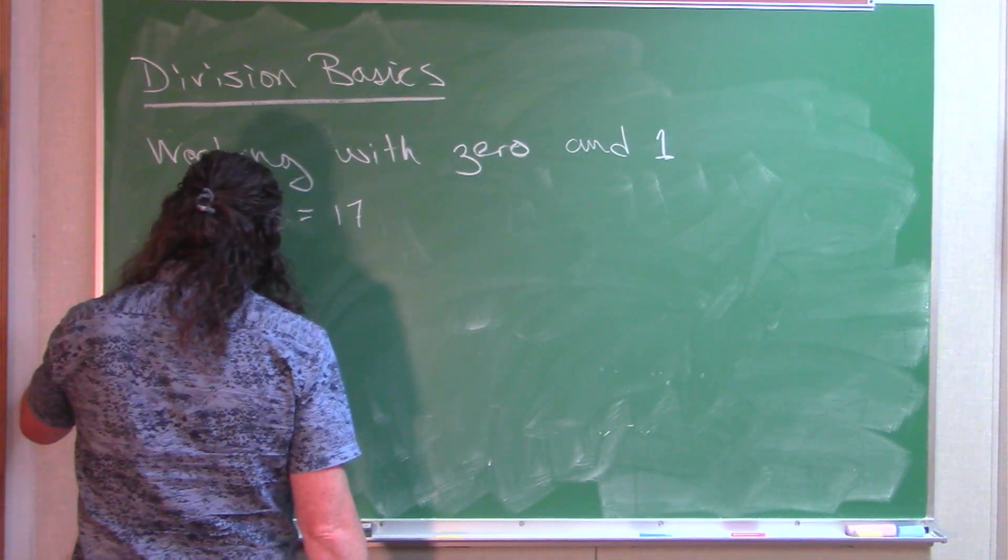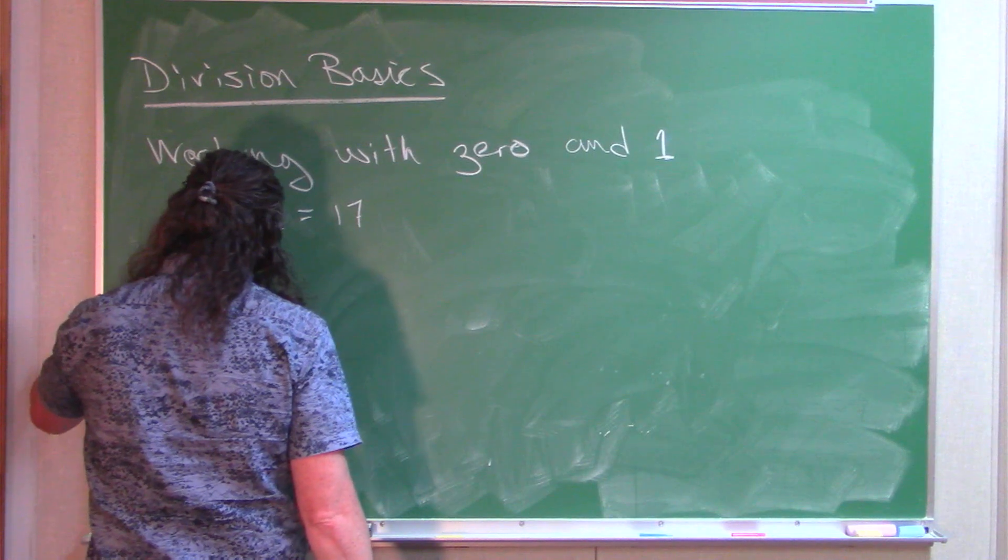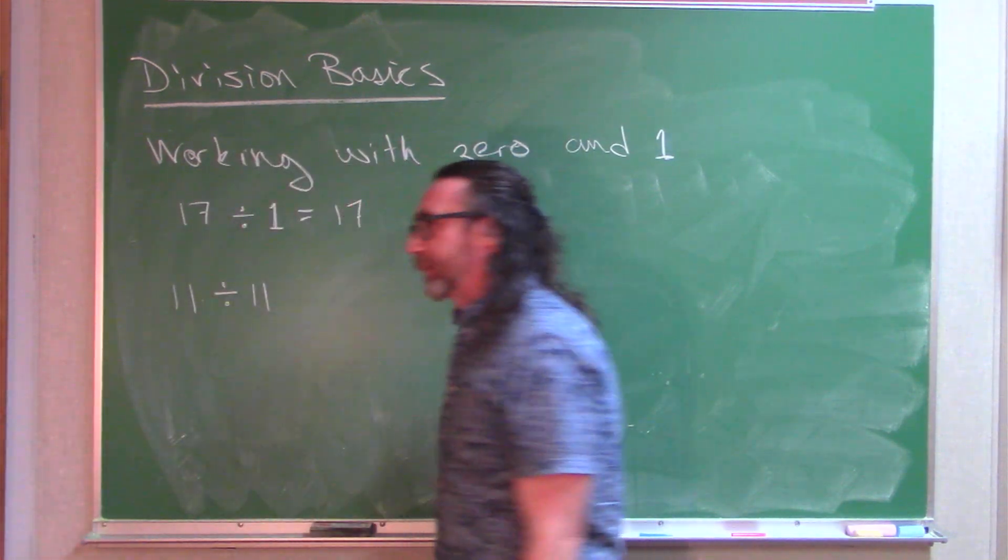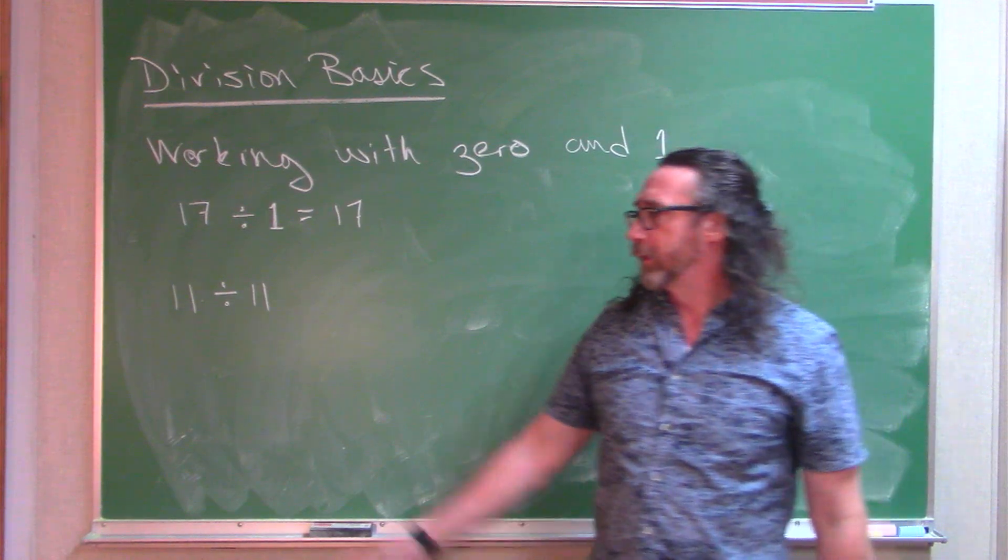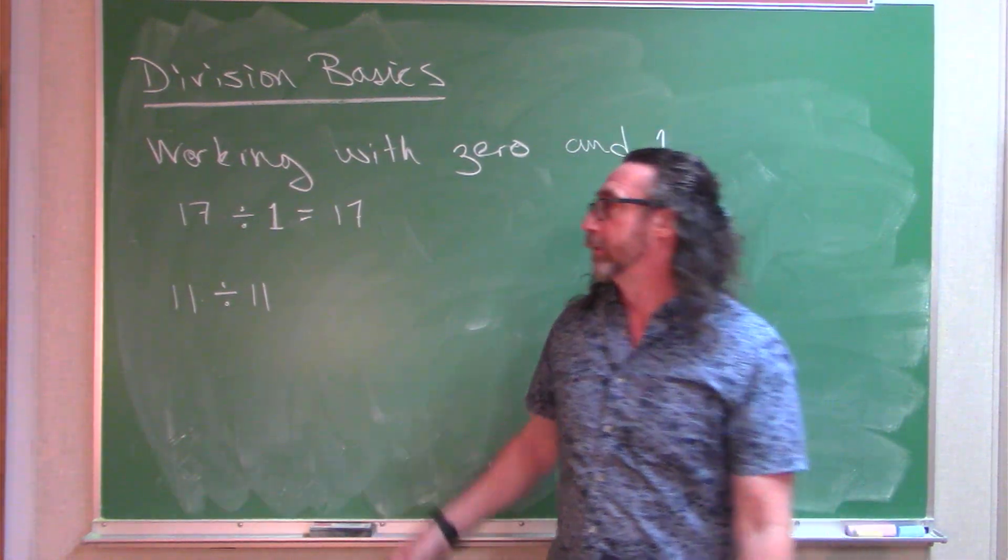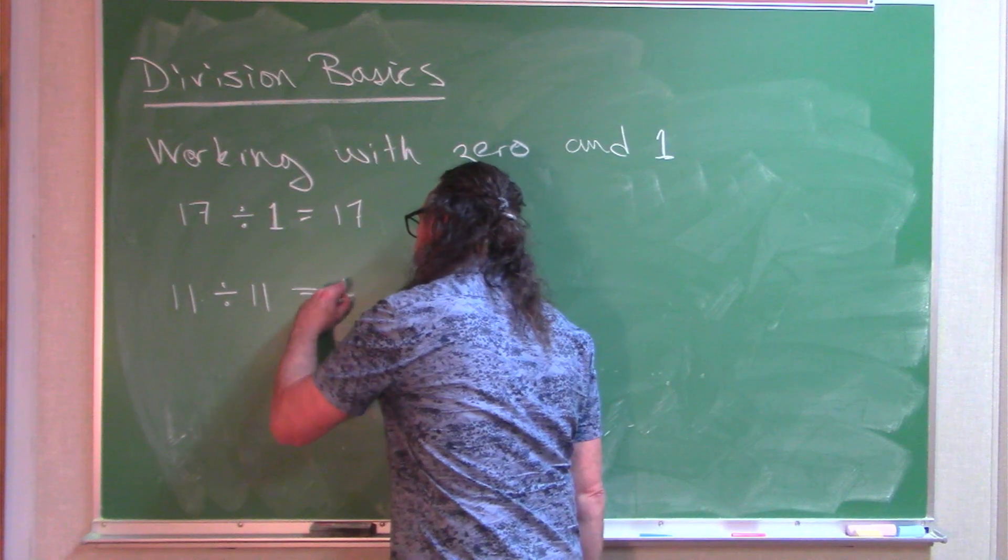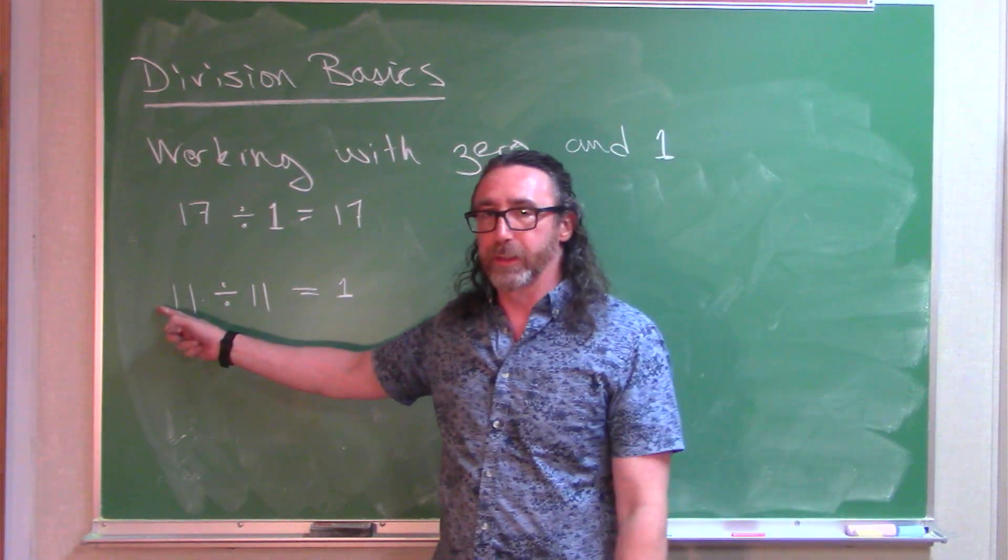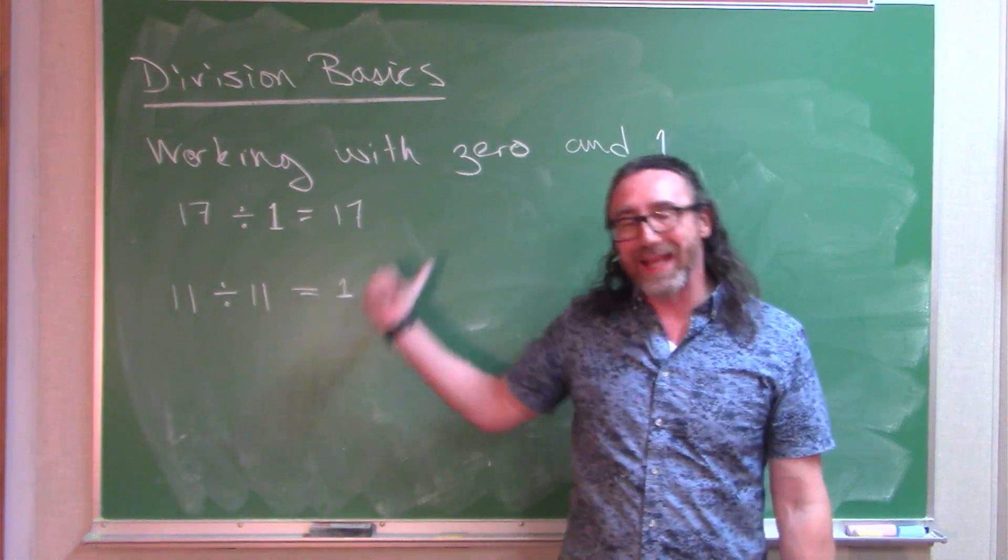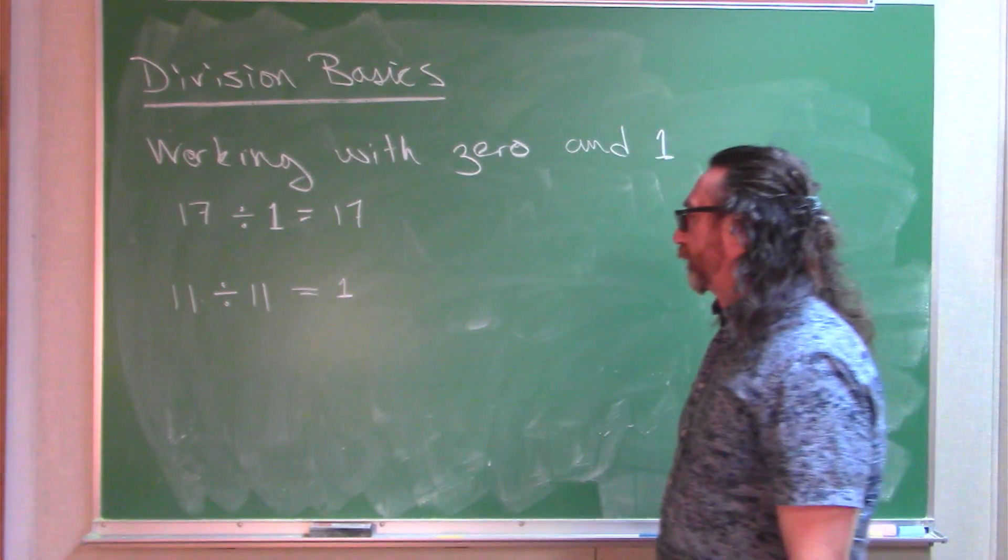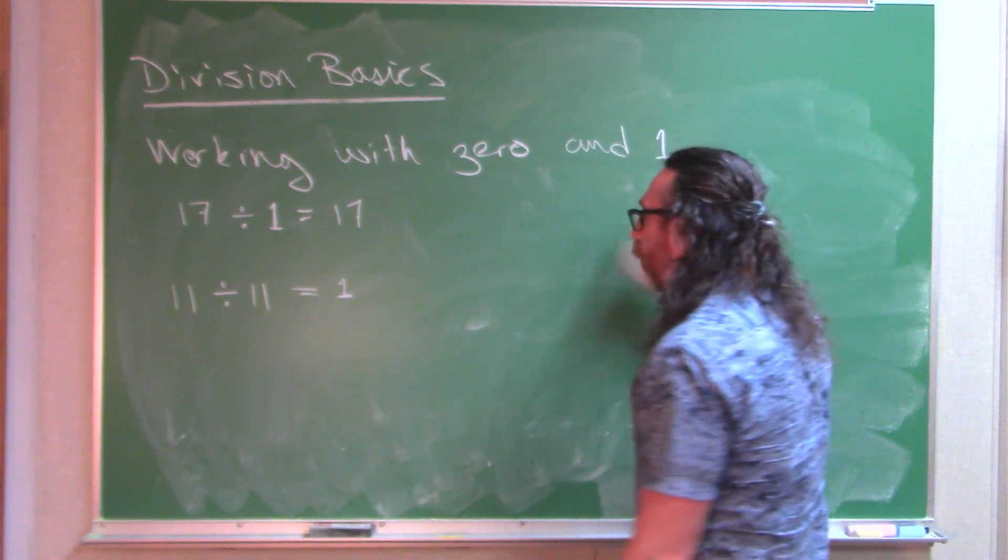Let me imagine this. What if I had 11 objects, and I divide it by 11. If I take 11 objects, how many groups of 11 can I make? Well, if I have 11 objects, I can make 1 group of 11. Whenever you take a number and divide it by itself, you get 1.